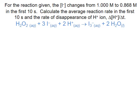We can use the average reaction rate to determine the rate of disappearance or rate of gain for any reactant or product, even if we didn't measure their concentration changes in the lab. The reaction shown is the decomposition of hydrogen peroxide, H2O2, in the presence of iodide ion and acid (H+), producing water and triiodide ion. We're told the iodide concentration changes from 1.0 moles per liter to 0.868 moles per liter in the first 10 seconds.